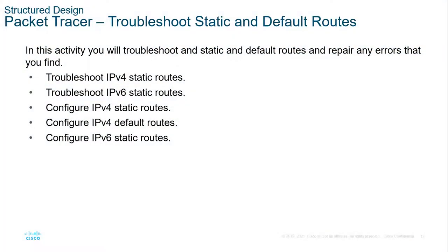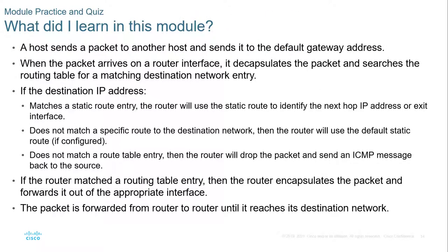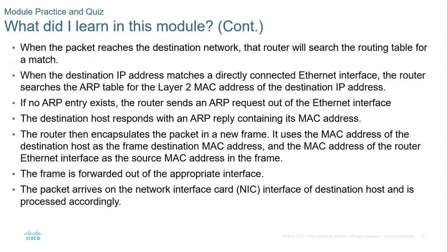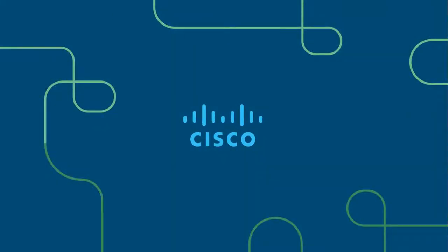This is the last module — it's pretty straightforward because it's all about troubleshooting and understanding the process. We have two main labs, and we looked at how the router takes a packet coming in using the three-step process. Understand that three-step process is a requirement: it will look for a matching route in the routing table, it will look for a default route, and it will drop the packet. Those three things you need to know.